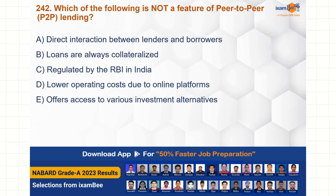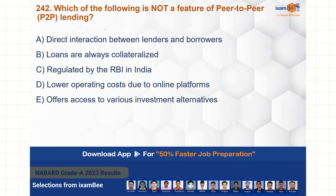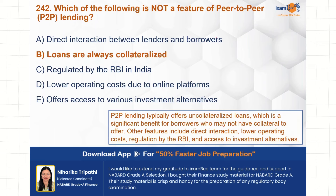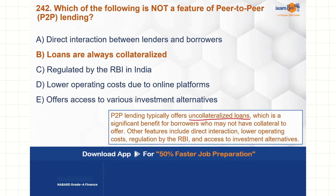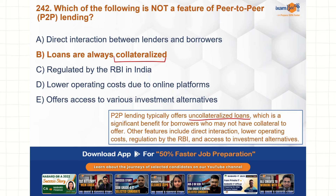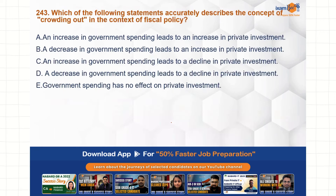Which of the following is not a feature of P2P lending, also called peer-to-peer lending? Direct interaction between lender and borrower — this one is correct. Loans are always collateralized — this is not entirely true. B is the correct choice here. P2P lending ka matlab uncollateralized loan hota hai, which is a significant benefit for the borrower who may not have collateral to offer.